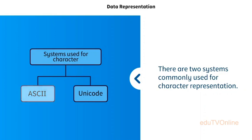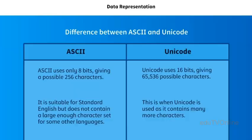There are two systems commonly used for character, text, numbers, and symbols representation: ASCII and Unicode. ASCII uses only eight bits, giving a possible 256 characters. It is suitable for standard English but does not contain a large enough character set for some other languages. This is when Unicode is used, as it contains many more characters. Unicode uses 16 bits, giving 65,536 possible characters.